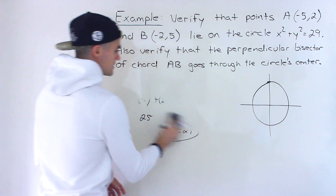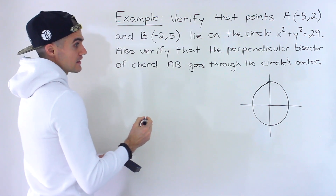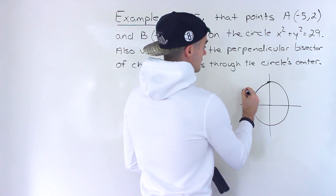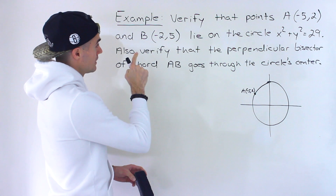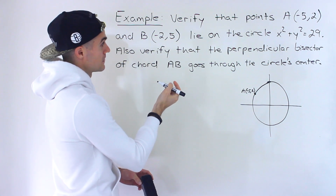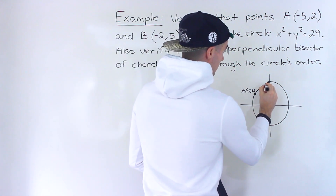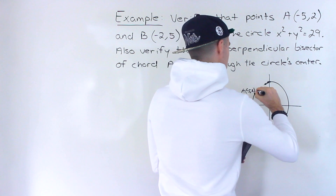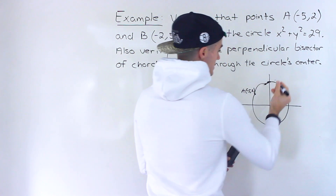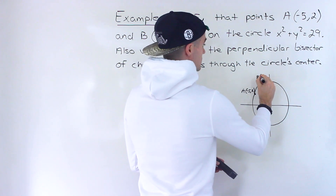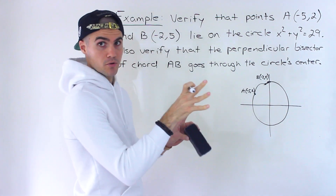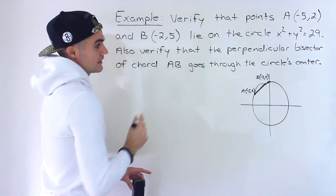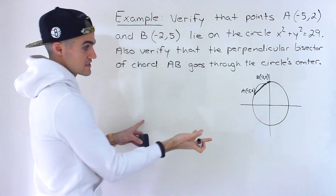Graphing the points: negative 5, 2 is point A, and negative 2, 5 is point B. Both points lie on the circle, forming chord AB. We need to verify that the perpendicular bisector of this chord passes through the center of the circle, which in this case is 0, 0.